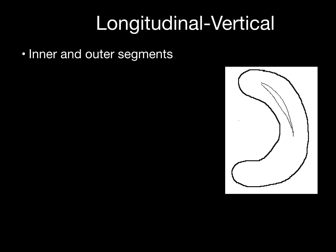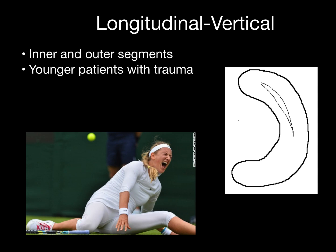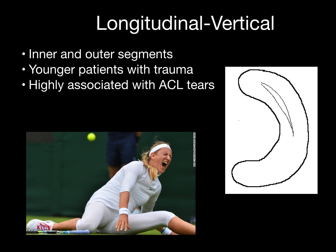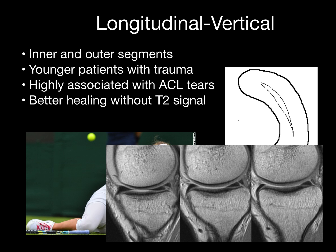The longitudinal vertical tear divides the meniscus into inner and outer segments and tends to occur in younger patients with trauma. It is highly associated with anterior cruciate ligament tears and has better healing potential in the absence of T2 signal — if you don't see it on the T2 sequence, it has a better chance of healing. Here's an example showing bright joint fluid on a water-sensitive sequence, with the tear extending to the periphery along the circumferential fibers. When tears are far peripheral, they can be really hard to detect.